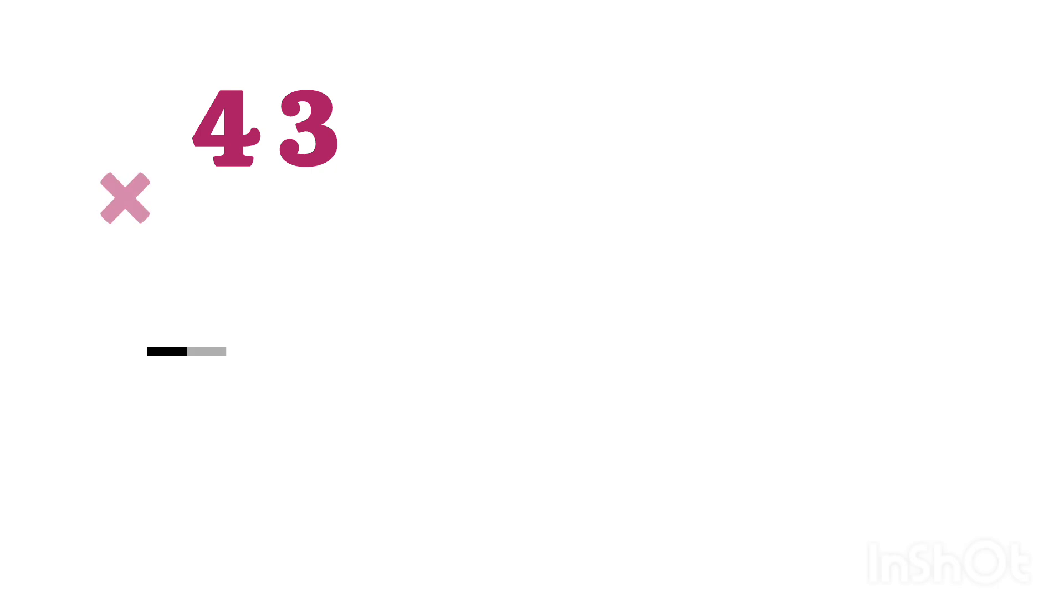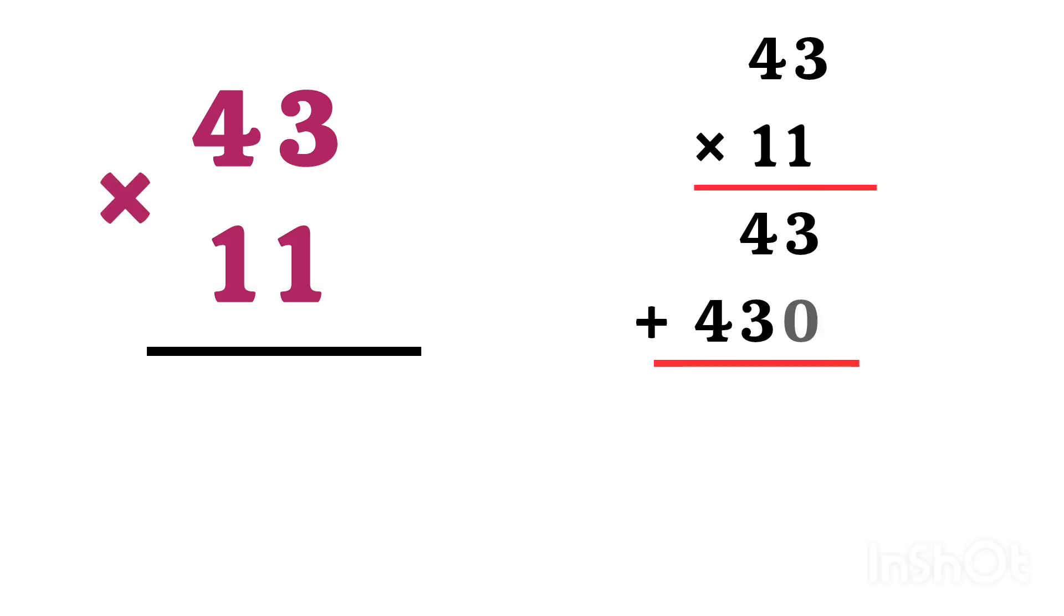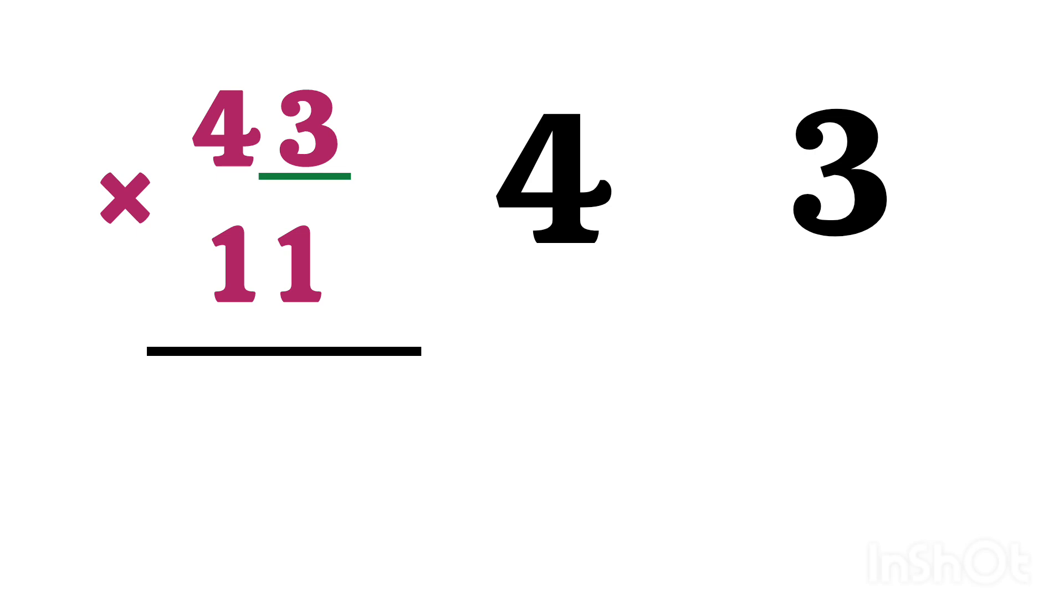If I ask you to multiply 43 with 11, I know we can use the method learned in school, but it is too long. By using this trick, it will be super fast. According to the first trick, take this 4 and then 3, and for finding the middle number add 3 and 4, we get 7. So write 7 here and we are done. Our answer is 473.